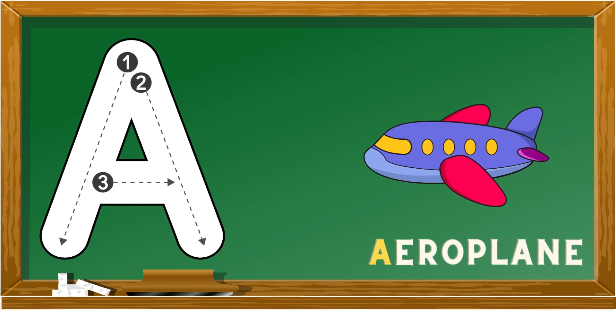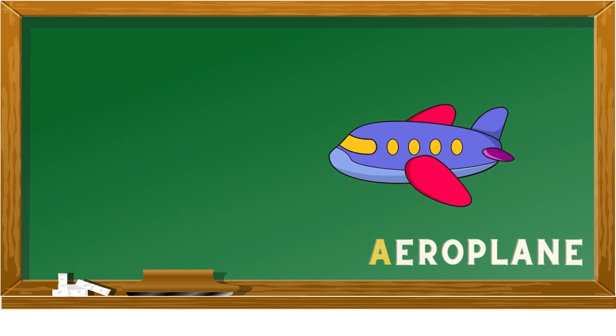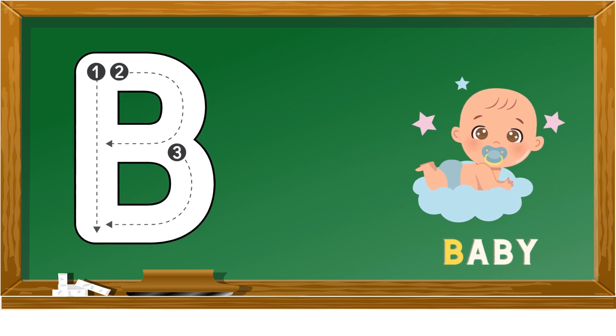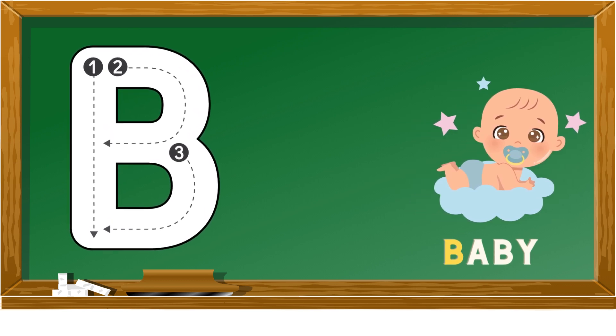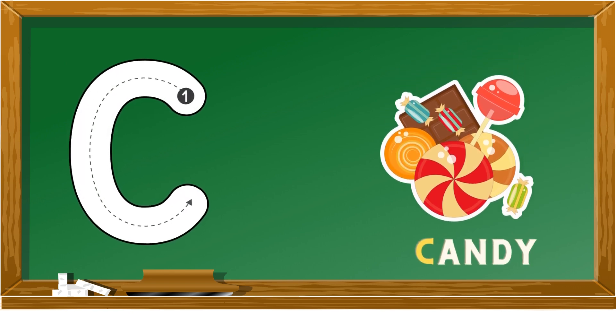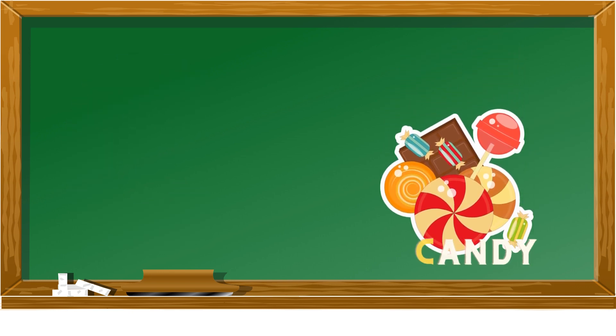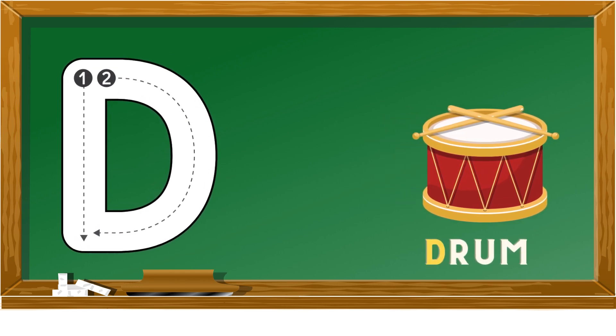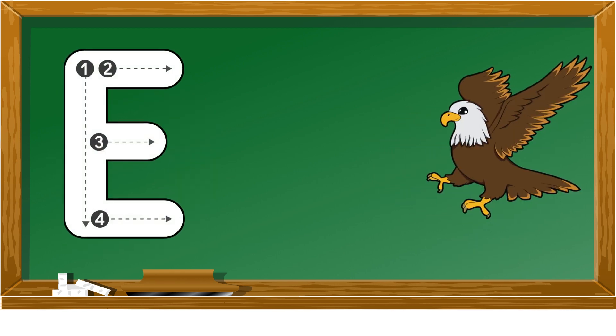A is for aeroplane, B is for baby, C is for candy, D is for drum, E is for eagle.